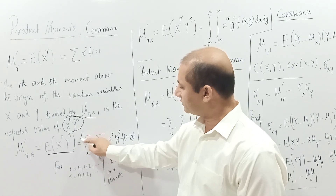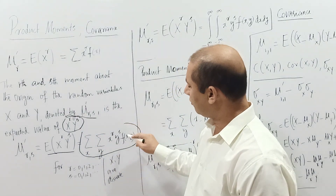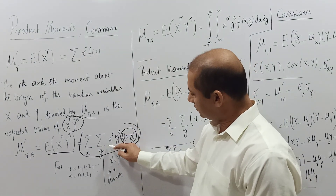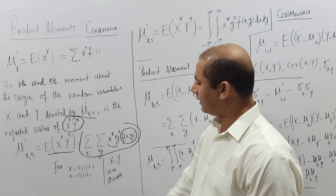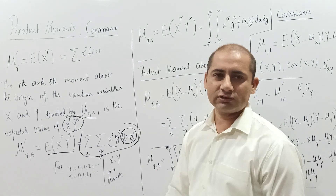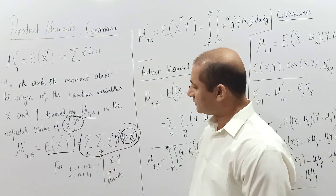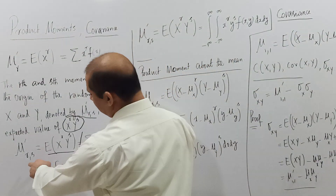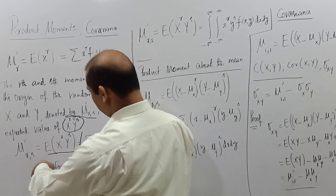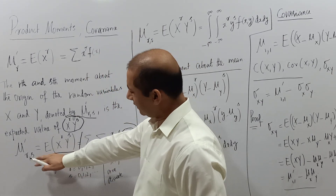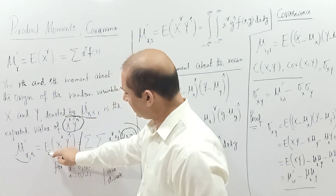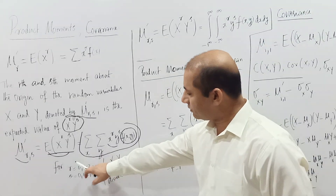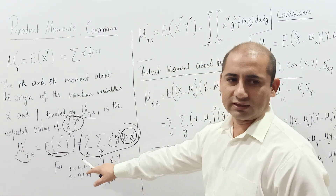Since this is an expectation, it gives us a double summation over the joint probability distribution, summing with respect to y and then with respect to x — treating x and y as discrete random variables. Here r takes values 0, 1, 2, and so on, and the same applies for s.